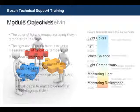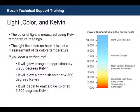Probably the most overlooked consideration when installing a CCTV system is lighting, and with that, the color of light and how it will affect your installation. Color temperatures refer to the color of a light source, and it is measured using the Kelvin temperature scale. Light itself has no heat — it is just a measurement of the color temperature that it actually produces.